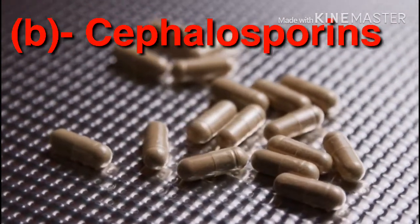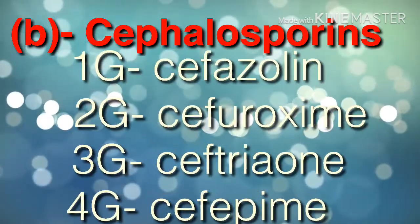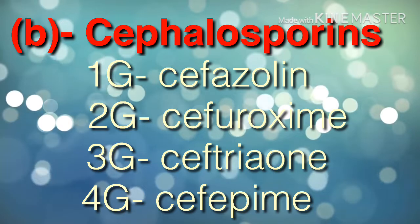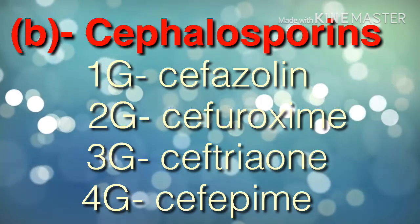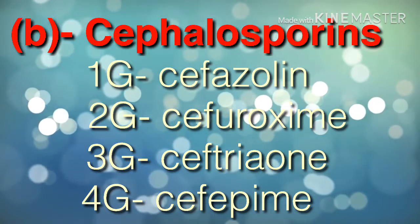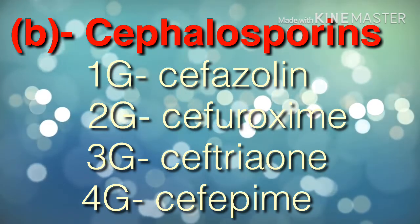B: cephalosporins. They have four types of generations: cefazoline, cefuroxime, cefotaxime, and cefepime.